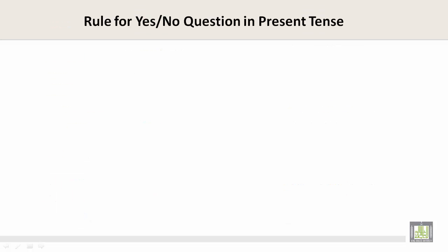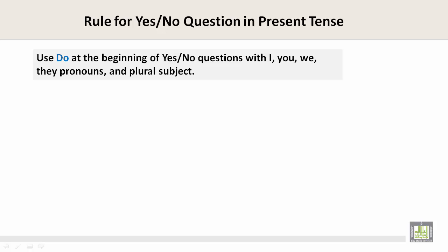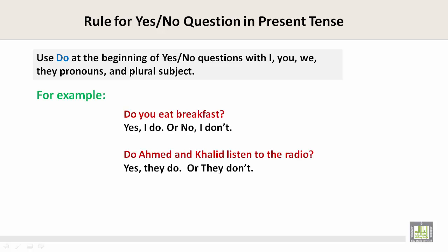Rule for yes or no questions in the present tense: Use 'do' at the beginning of yes or no questions with I, you, we, they — pronouns with a plural subject. For example: Do you eat breakfast? Yes, I do. Or no, I don't. Do Ahmed and Khalid listen to the radio? Yes, they do. Or they don't. The rule is: do + subject + verb + object.